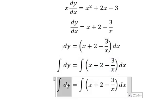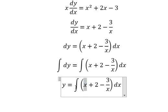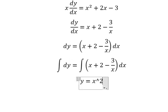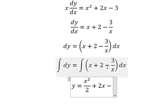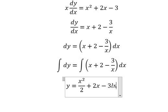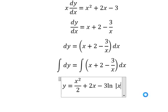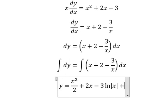So the integration of dy gives us y. The integration of x gives us x squared over 2. Then 2x. This term gives us negative 3 ln of the absolute value of x, and we add the constant c.